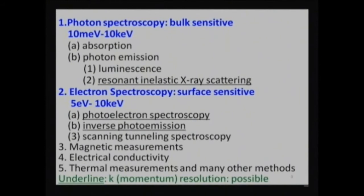Another approach is electron spectroscopy, which is, however, surface sensitive. The photon energy used is from 5 eV up to 10 kiloelectronvolt in most cases. Today I will talk about photoelectron spectroscopy; inverse photoemission could be done also. Scanning tunneling spectroscopy is also a very nice technique. Magnetic, electrical, and thermal experiments could also be used to study electronic structures. But momentum information is only available from resonant X-ray scattering and photoelectron or inverse photoemission techniques.